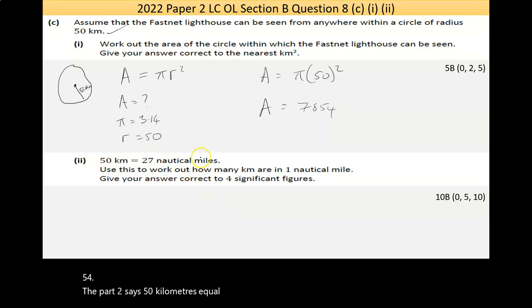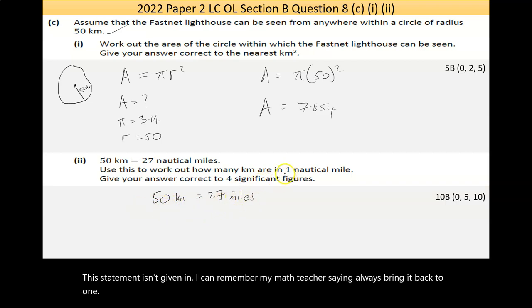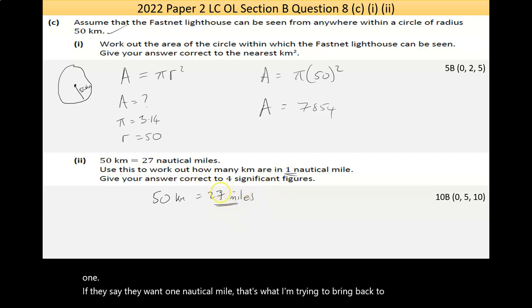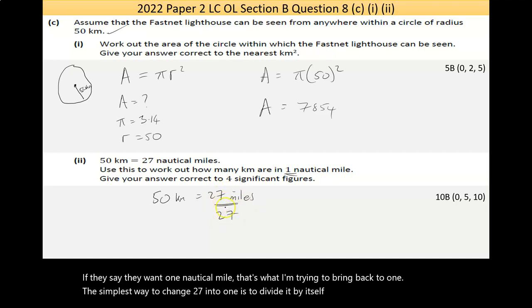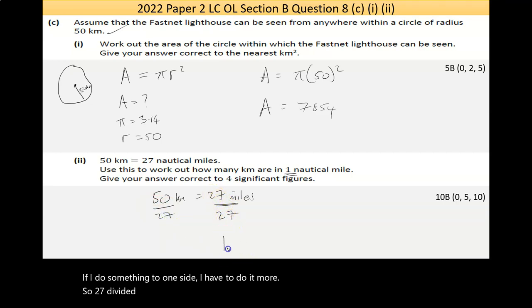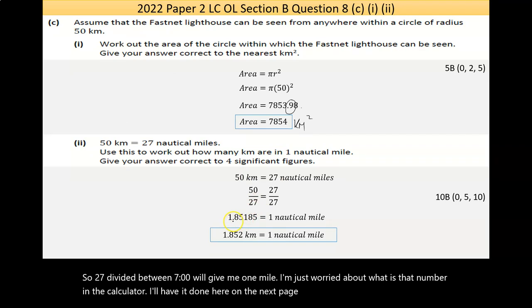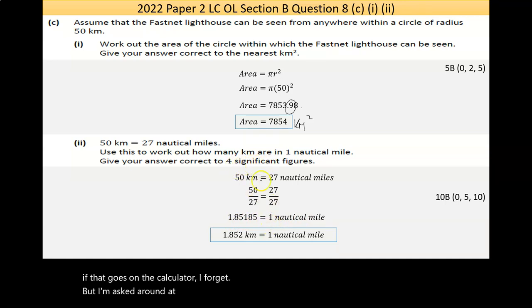Now, part two says, 50 kilometers equals 27 nautical miles. Use this to work out how many kilometers are in one nautical mile. Now, you have a statement here. I'm going to rewrite it. 50 km is equal to 27, which we'll say miles. Now, this statement isn't given in, I can remember my math teacher saying, always bring it back to one. If they say they want one nautical mile, that's what I'm trying to bring back to one. Now, the simplest way to change 27 into one is to divide it by itself. If I do something to one side, I have to do it to both. So, 27 divided by 27 will give me one mile. I'm just worried about what is that number in the calculator. I'll have it done here on the next page. I get 1.85185. I'm not sure if that goes on the calculator. I forget. But I'm asked to round out the four significant figures.